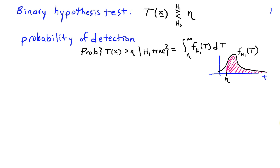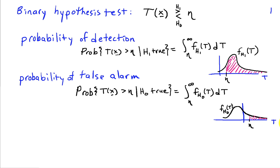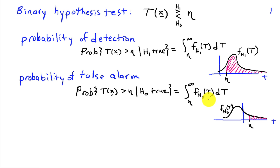It's conventional to also look at the probability of incorrectly deciding that H1 is true, or what we've called the probability of false alarm. This is the probability that we decide H1 when H0 is really true — the probability that our test statistic is greater than the threshold under the condition that H0 is true. We have a probability density function for our test statistic under hypothesis H0, and the area under that PDF from eta to infinity gives us the probability of false alarm.